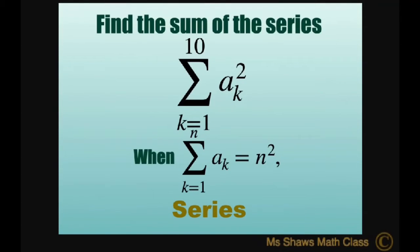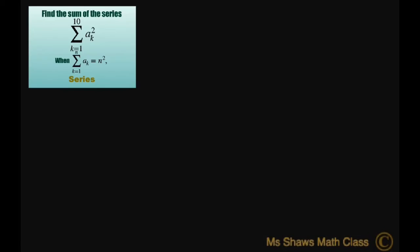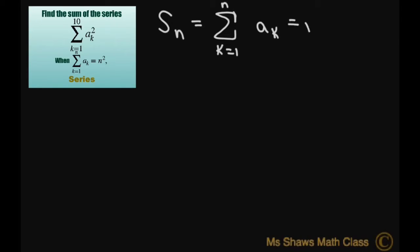Hi everyone. We're going to find the sum of the series from k equals 1 to 10 of a sub k squared. This is given that the sum from k equals 1 to n of a sub k equals n squared. So let's set this up: the sum S of n equals n squared.